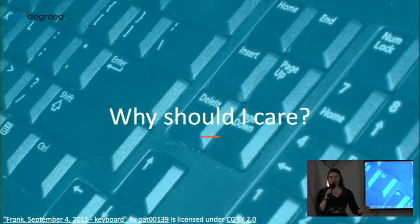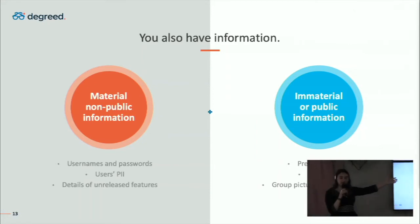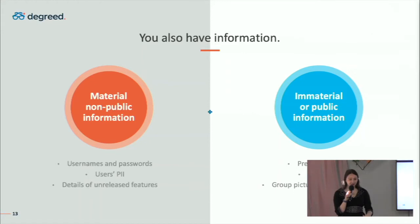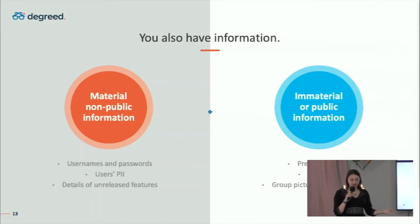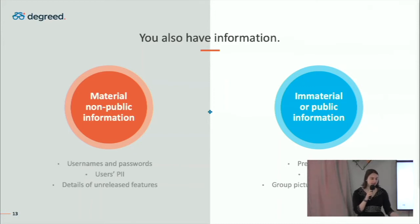Why should you care about this? Well, you also have a lot of information. There is the equivalent of material non-public information — things that everybody knows you shouldn't disclose and it's a huge problem if you are disclosing them. You've got people's usernames and passwords, users' personally identifiable information, details of your unreleased features — the stuff we say is a definite breach if it gets leaked. But you also have some immaterial or public information, like your press releases, job ads, and group pictures from your onsite, that people can combine to constitute information that you may or may not have realized you were making public.